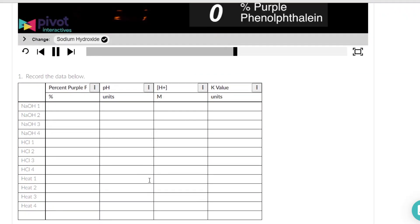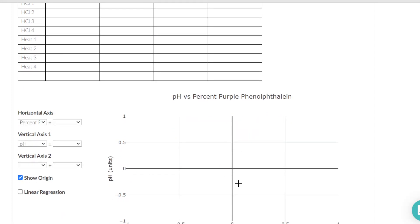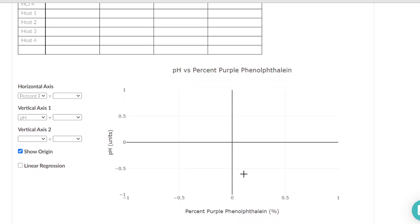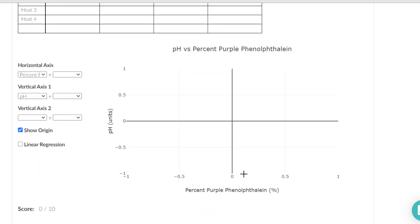After you record those, they basically have you draw a graph of the pH versus purple phenolphthalein. And really what we're looking for is that K, the equilibrium constant, should remain about the same no matter if you add chemical or take chemical away.